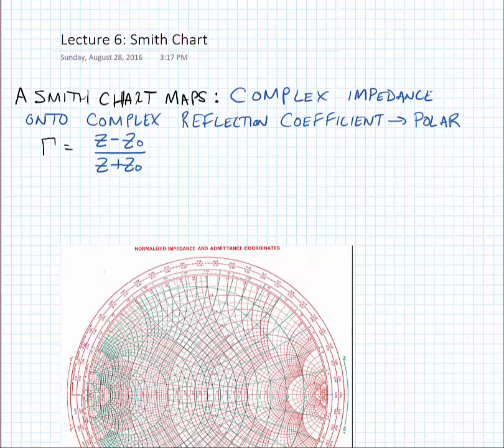The characteristic impedance z0 is just any arbitrary impedance. Typically it's 50 ohms and it can be complex if we want it to be.